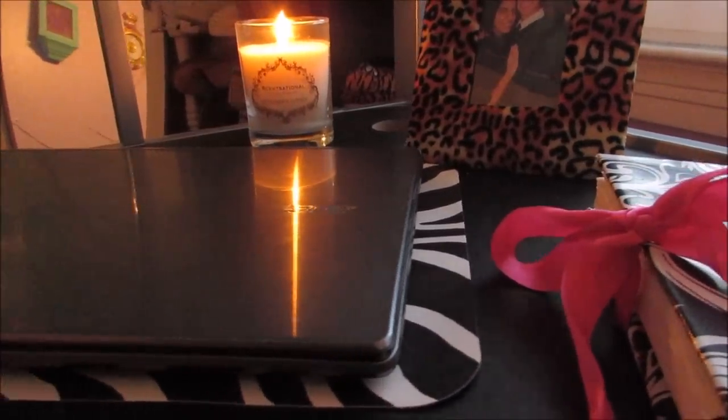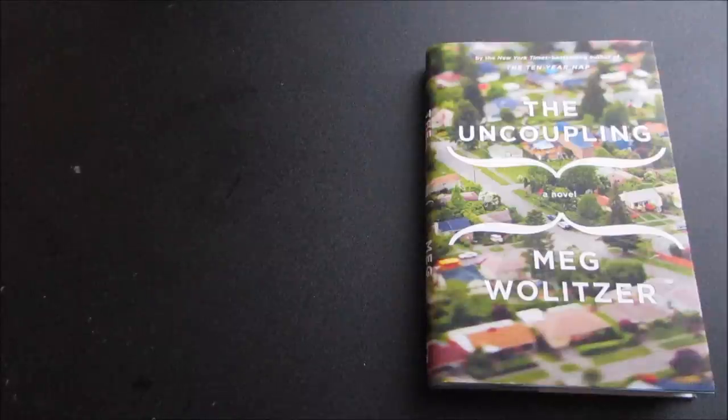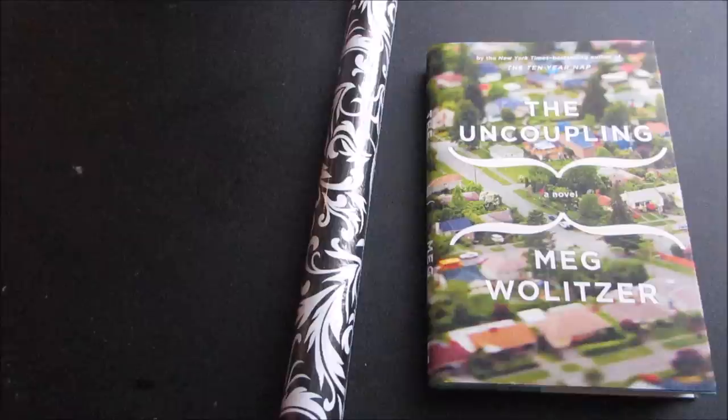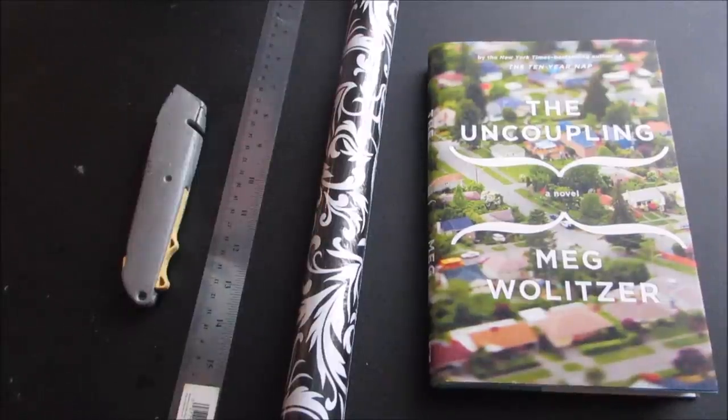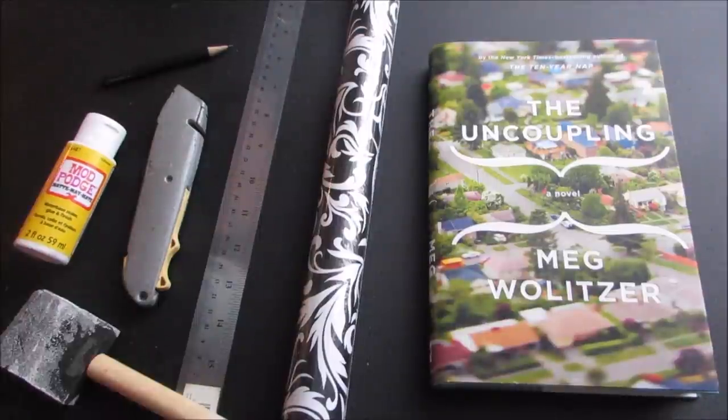This is called a book safe. It looks like a real book but you're actually using it as storage. For this DIY you're going to need a hardcover book, I got this one from the dollar store. Make sure it's thick enough to put your item inside. Some decorative paper, I used wrapping paper also from the dollar store. A ruler, an exacto knife, a pencil, some mod podge, and a thick or thin paintbrush.